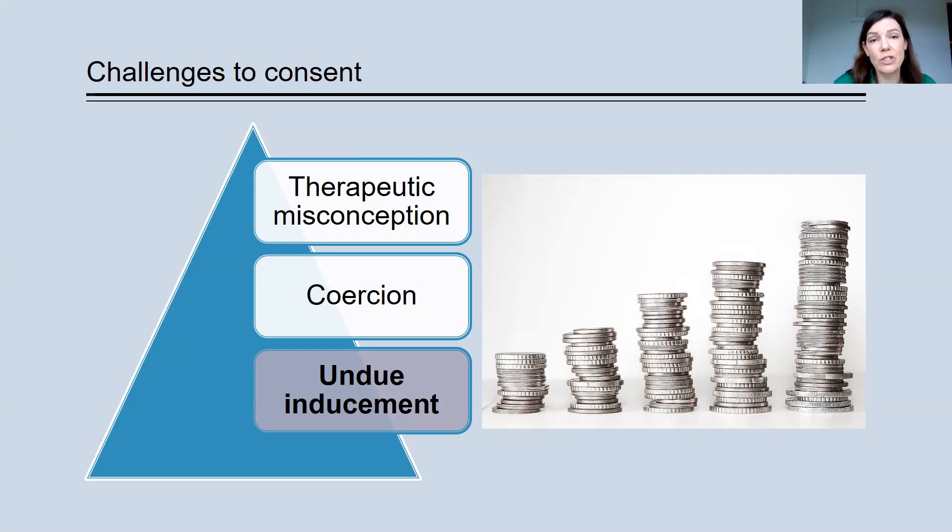The concern, the potential concern is undue inducements. And this is defined as an offer of money or compensation or something valuable that is so high that it undermines the potential participants' ability to reason rationally about the risks and benefits of research. It essentially, it's so much money, it blinds them.